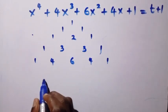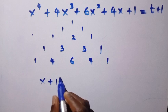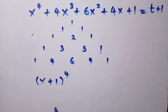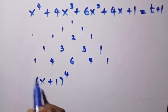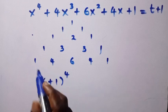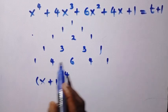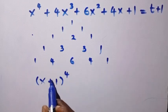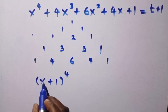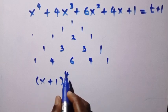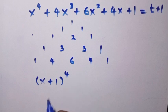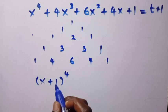Suppose we expand (x + 1)^4. How will I choose this? The last number here is 1. 1^4 is still 1. The first number is x^4, which is still x^4. Everything here is positive, so we choose positive.